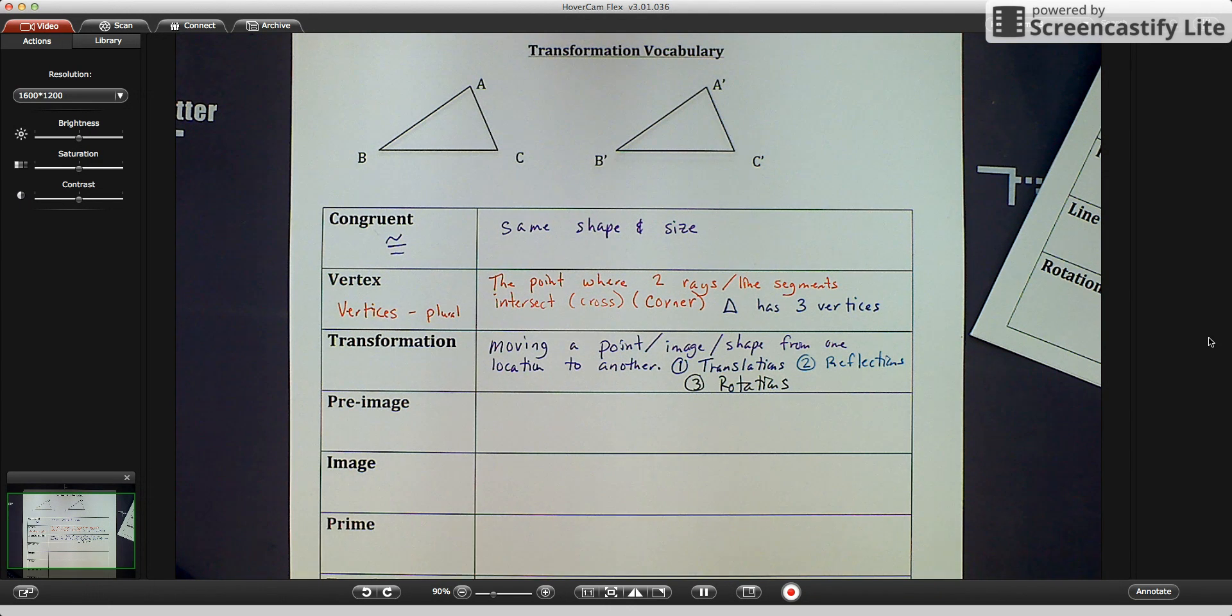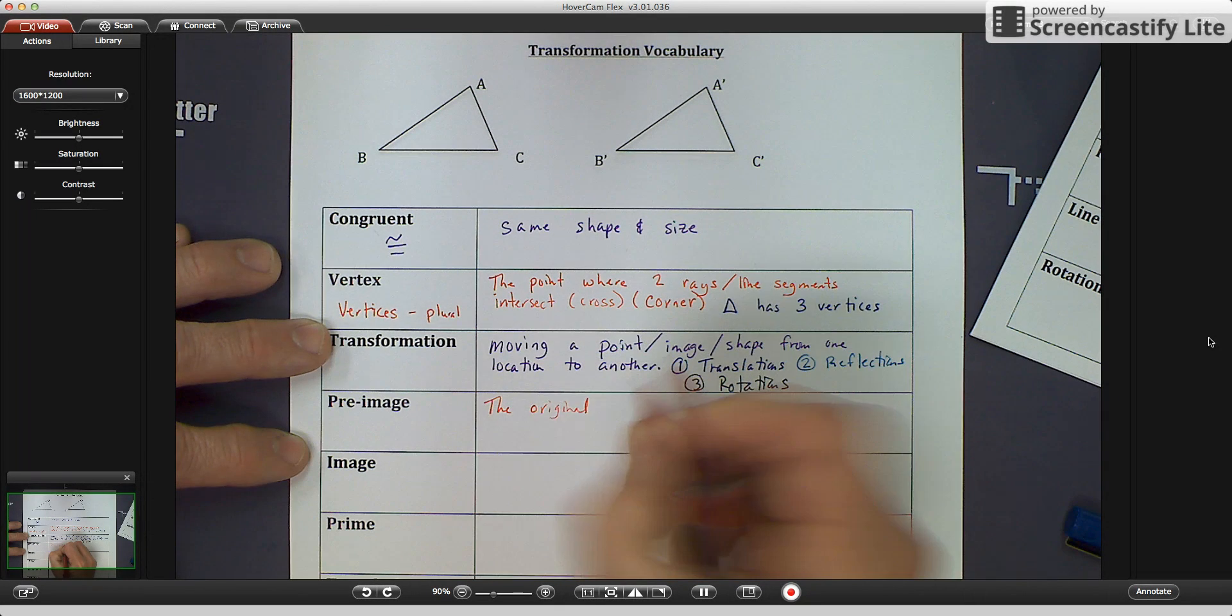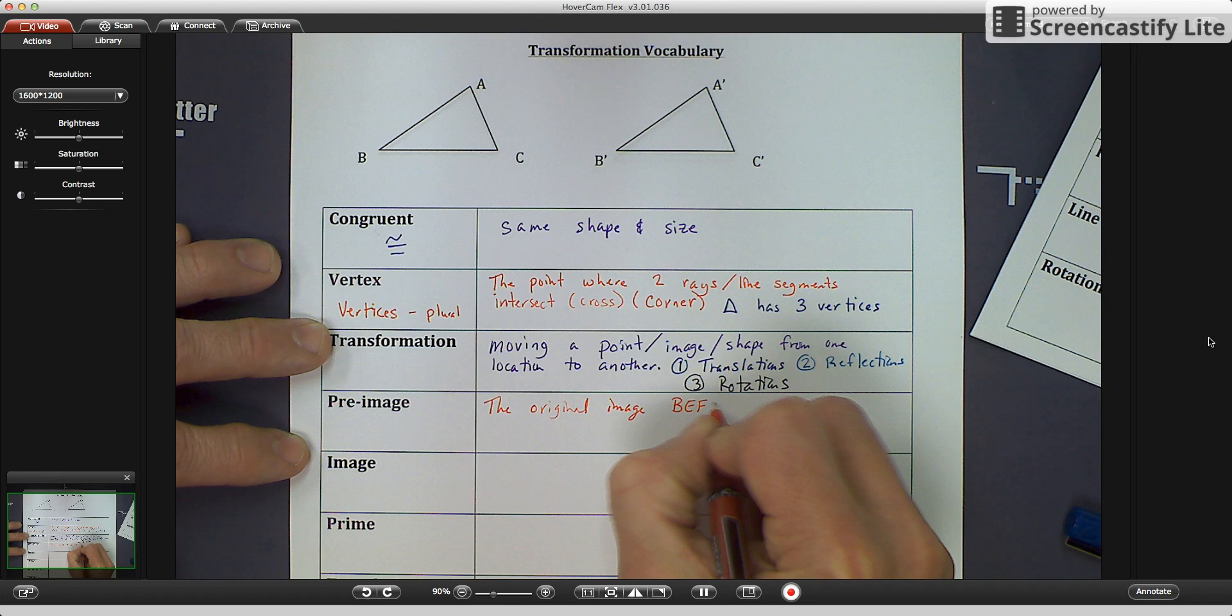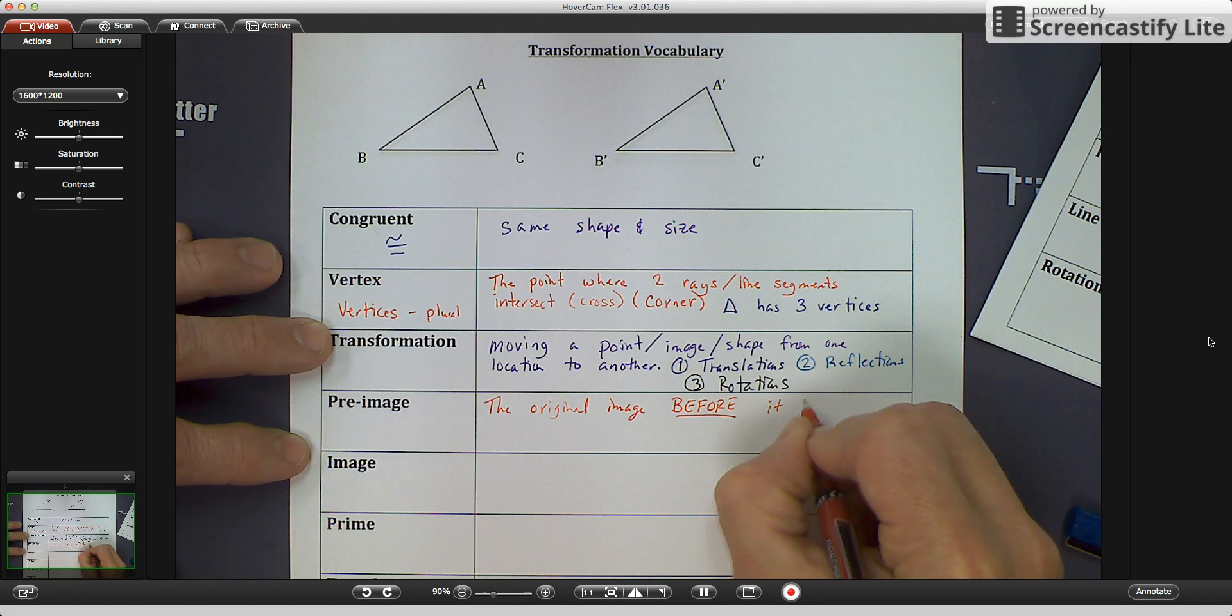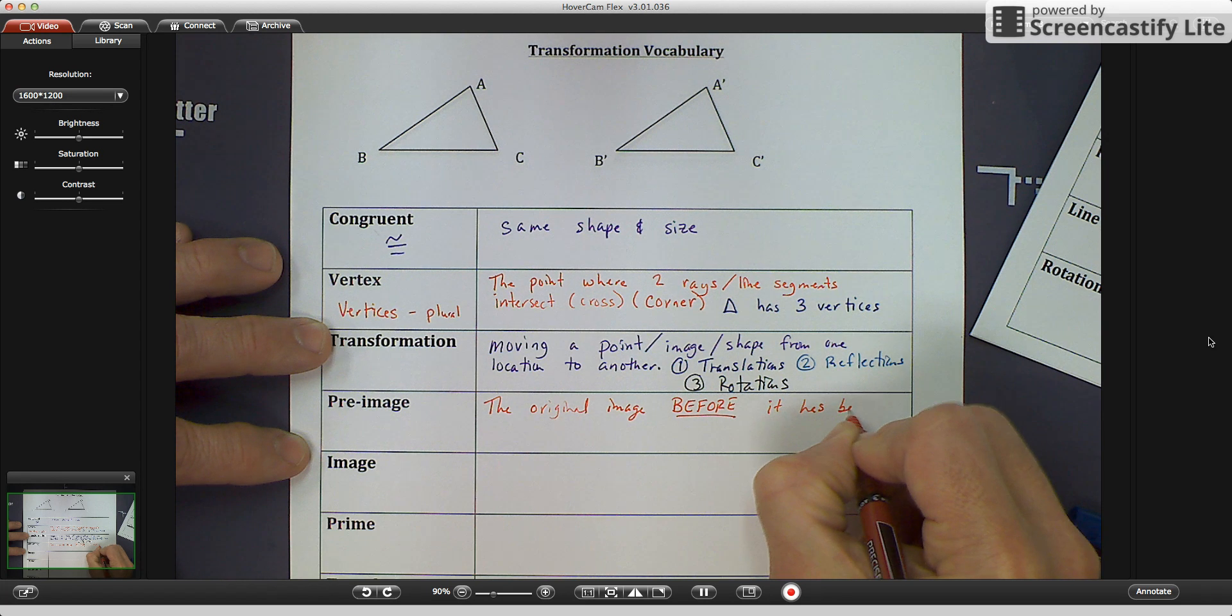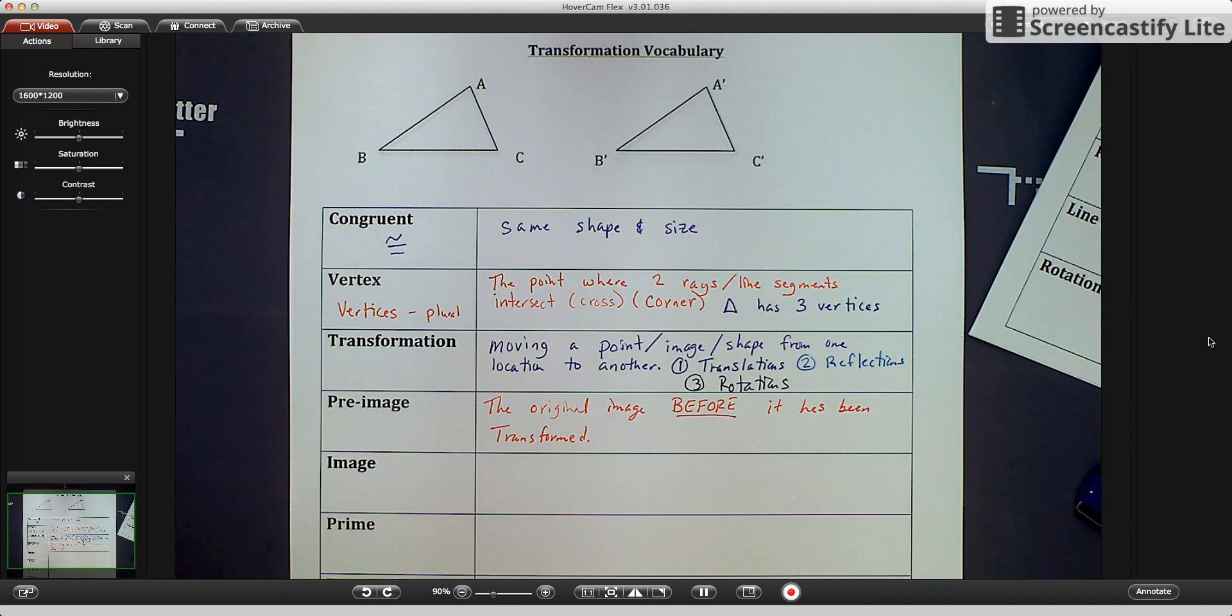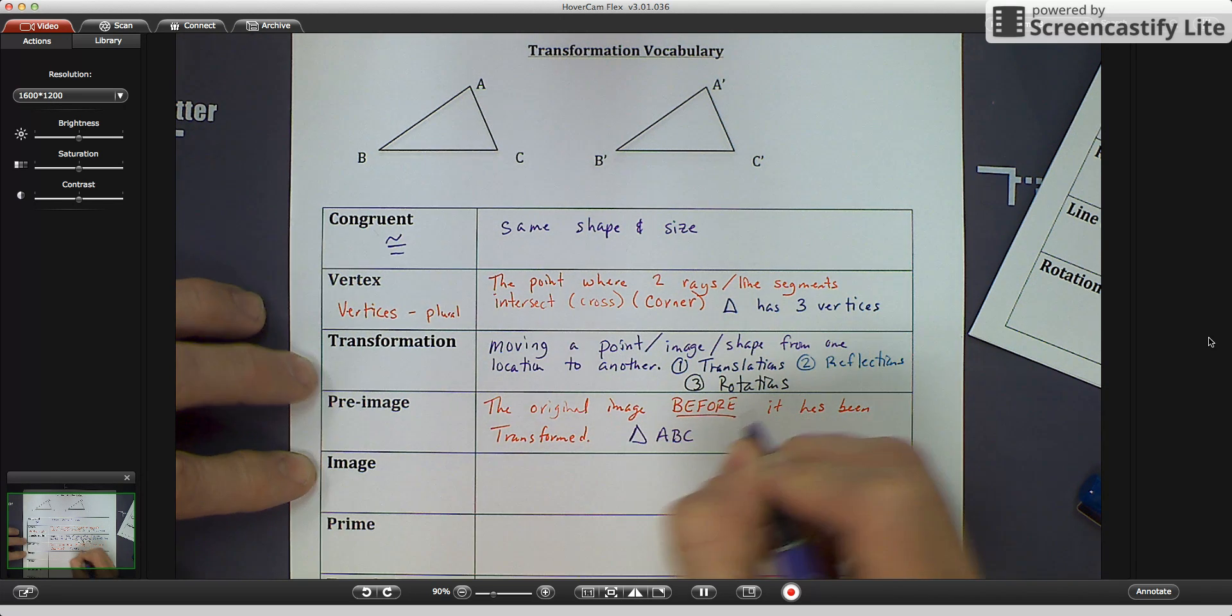The fourth word that we're talking about is pre-image. The pre-image is the original image before, I'm going to put that in all capitals, it has been transformed. When the triangle's up top, the pre-image is triangle A, B, C.